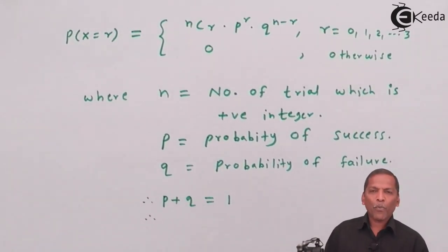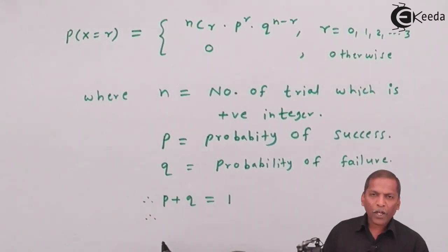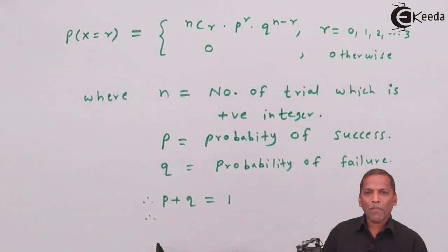And therefore, from this relation, we can find the value of q, that q equal to 1 minus p.